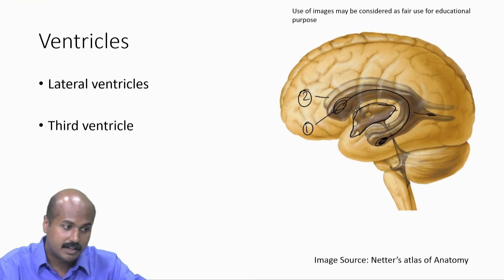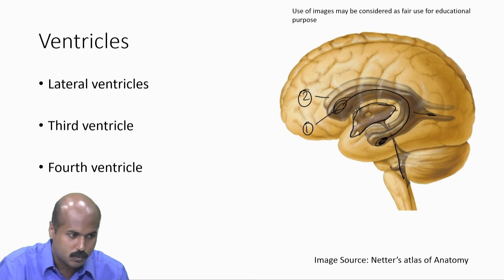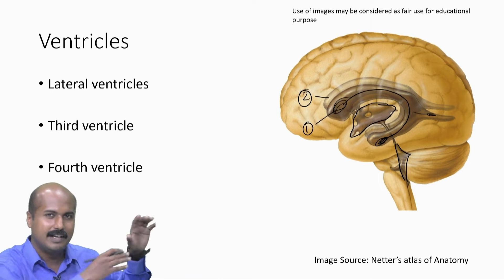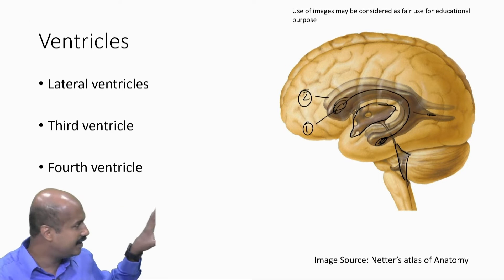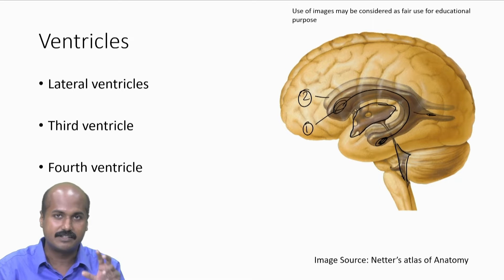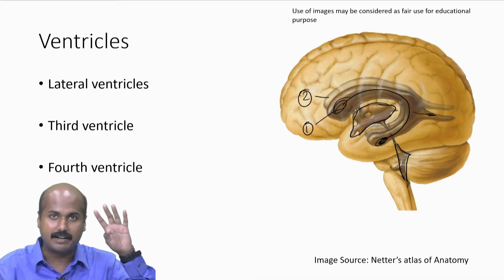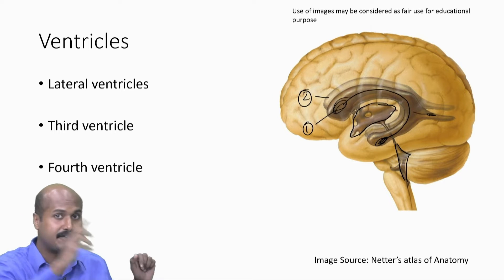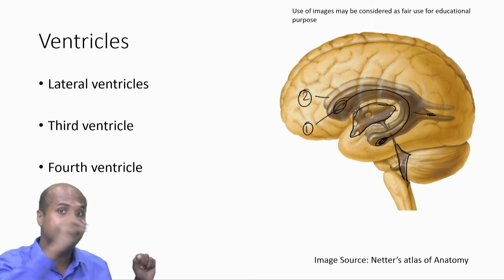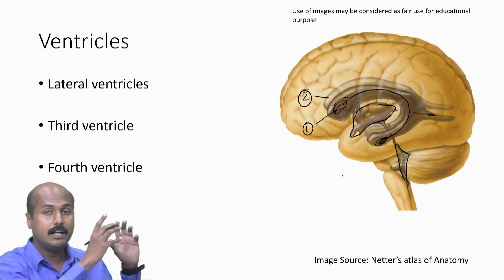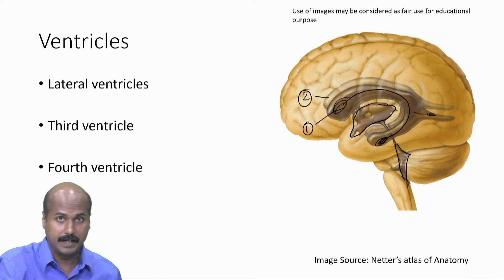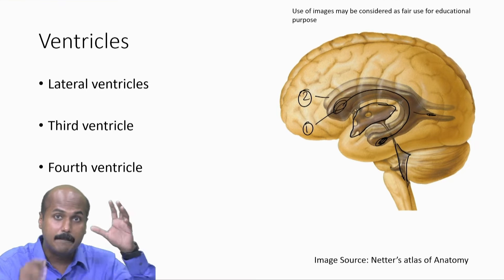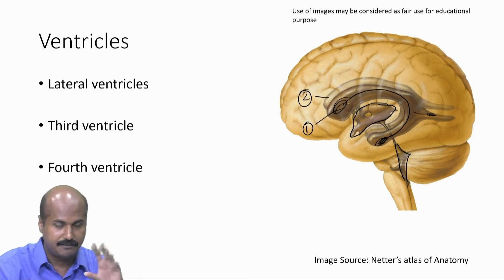Within the diencephalon you have the third ventricle. The third ventricle then communicates into the fourth ventricle. In this lateral projection view, the fourth ventricle appears as a tent-shaped or triangular-shaped cavity. So altogether there are four ventricles: two lateral ventricles in the cerebral hemispheres, one third ventricle in the diencephalon, and one fourth ventricle in the hindbrain.